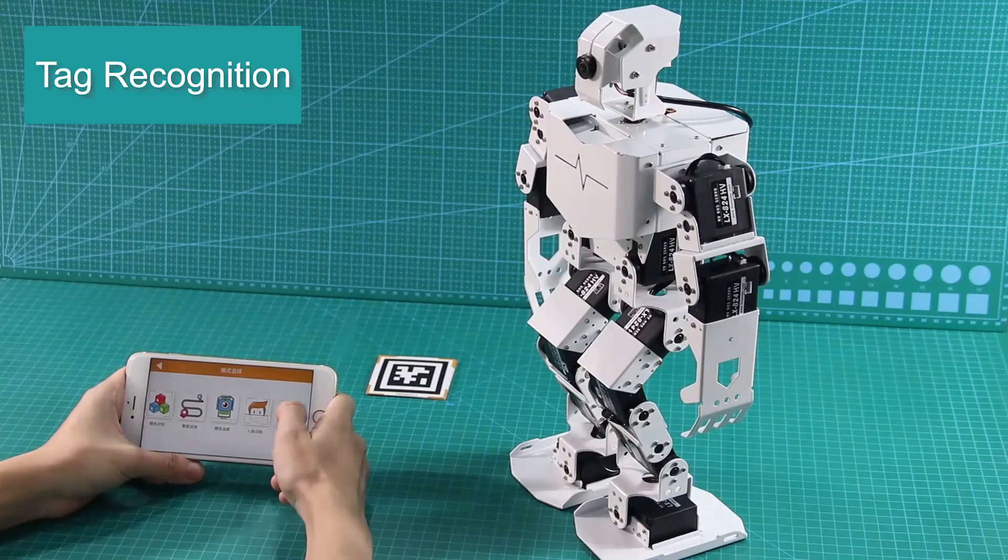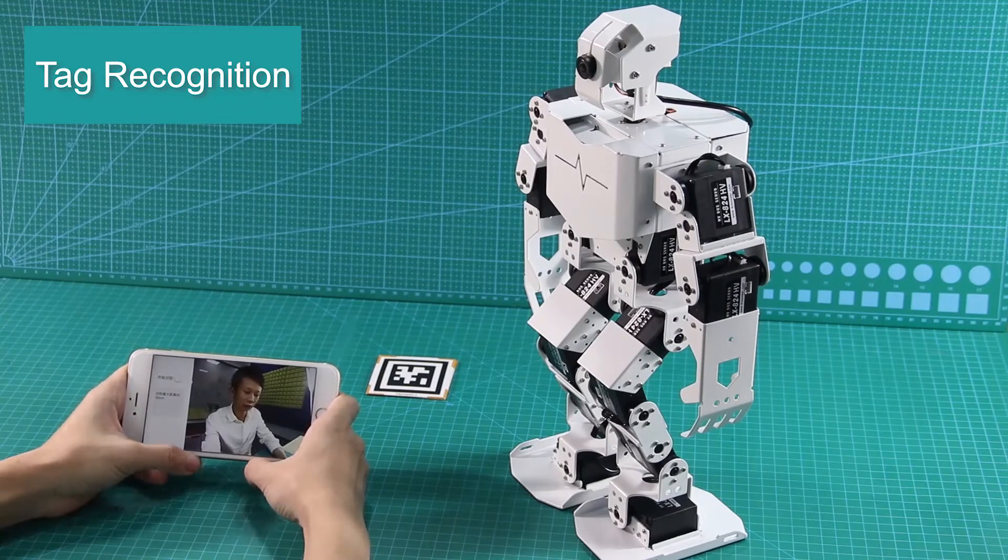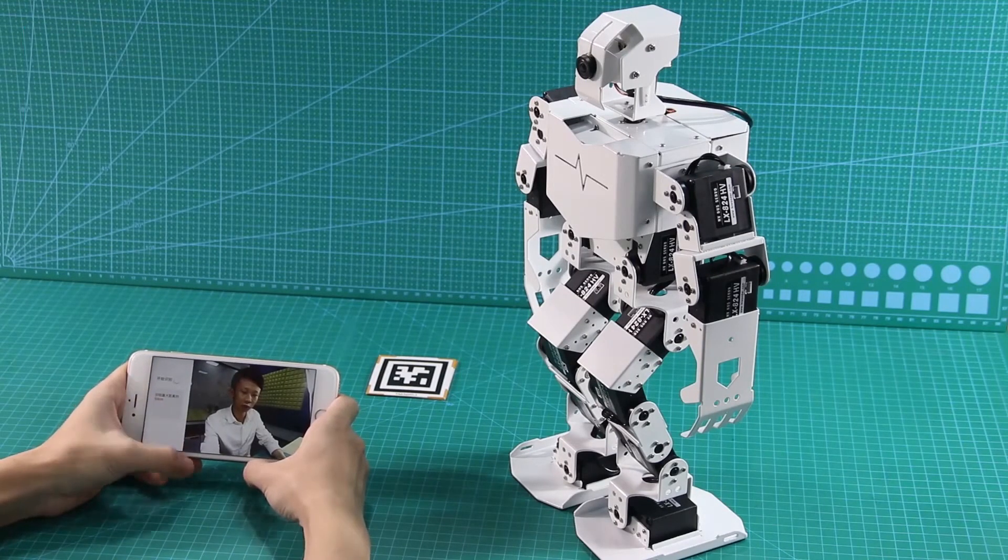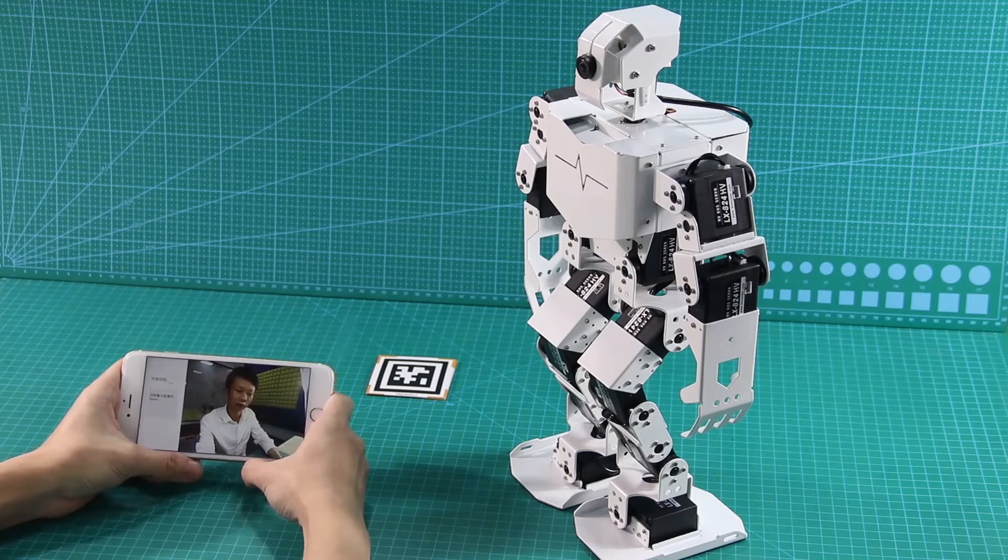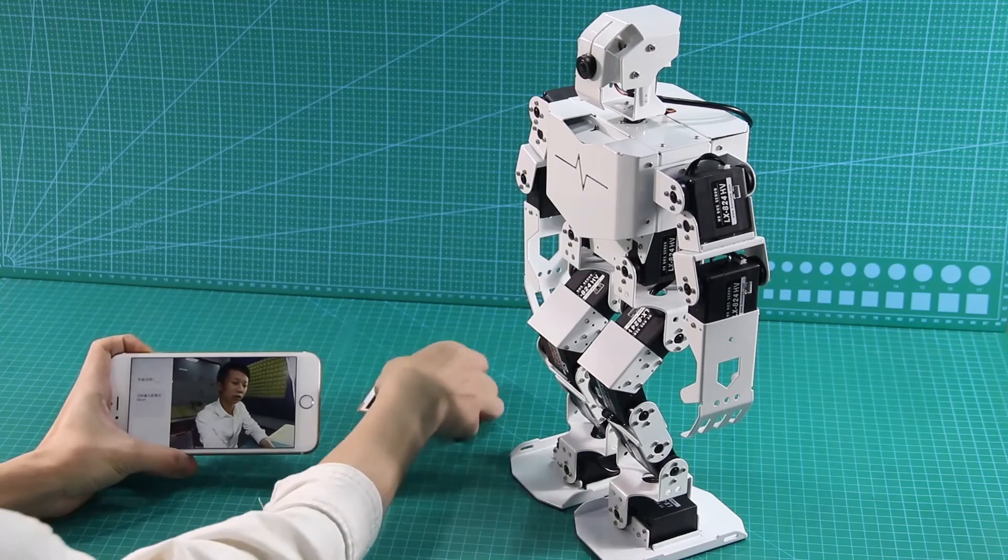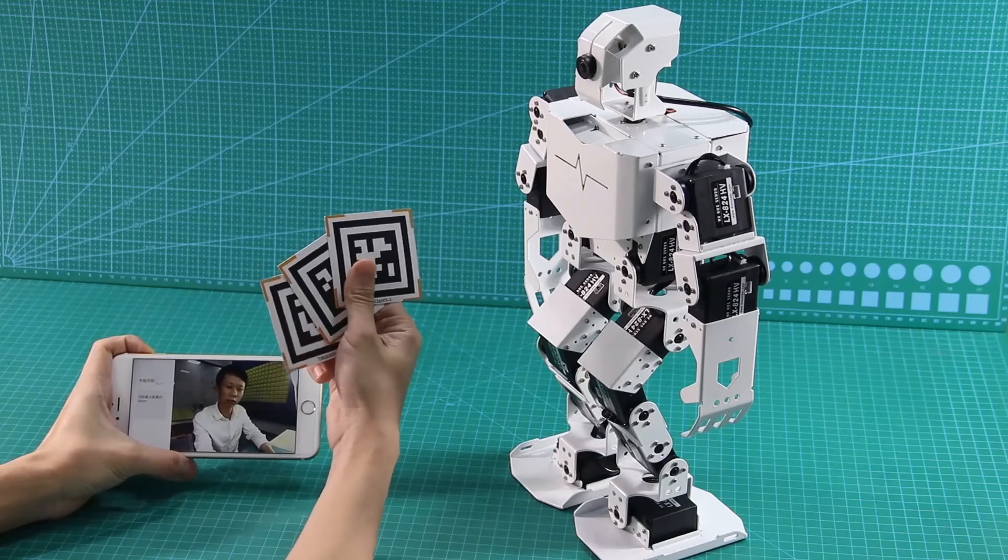Next game is Tag Recognition. Please note that the maximum recognition distance is 50 cm. It recognizes the tag to execute the corresponding actions.